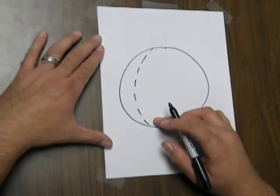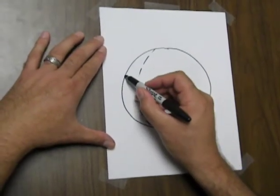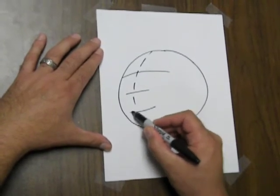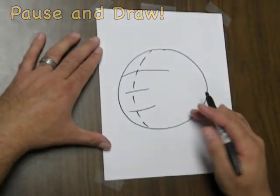This is going to be the center line for the face. We're going to do an eye line, a nose line, and a mouth line. You can start to see this face come together.